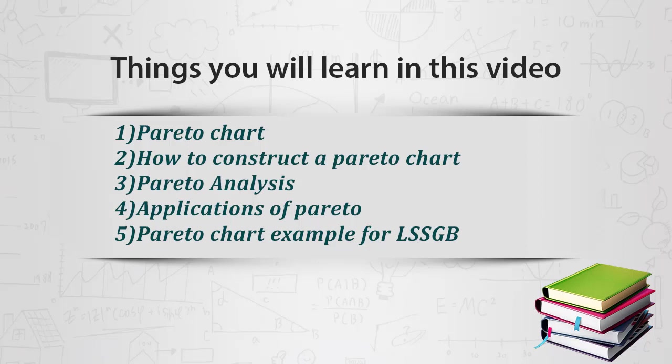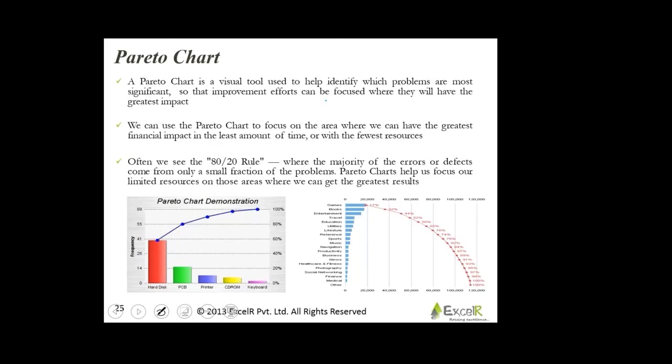This is a Pareto chart. It is a visual tool used to identify which problems are most significant. If you look into this Pareto chart, hard disk is supposedly causing the most number of problems, followed by PCB, circuit board, then printer, then the CD-ROM and the keyboard. But do I need to focus on all of these things?